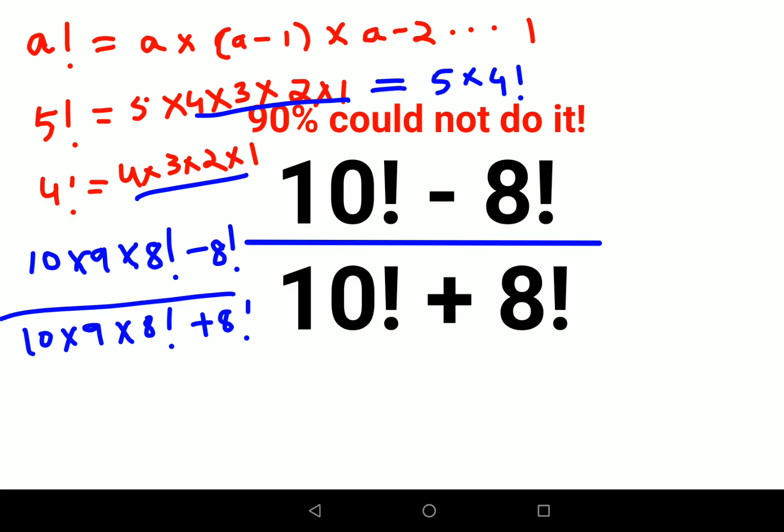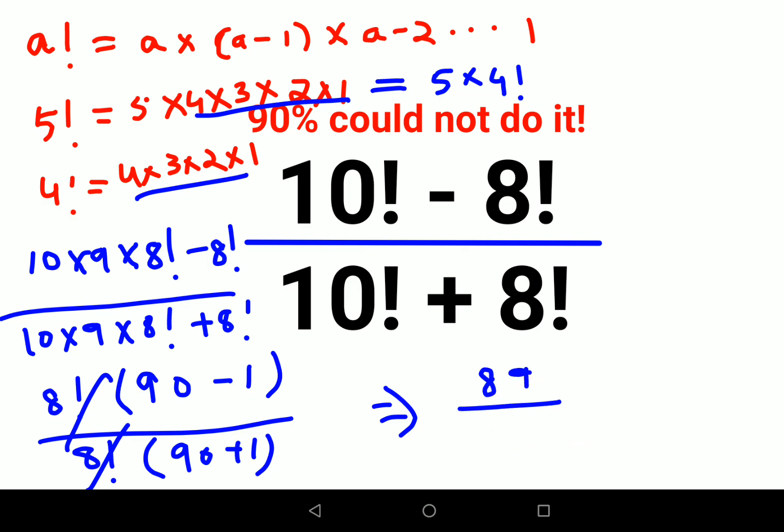So now what we can do is take the 8 factorial common from the numerator. So you are left with 10 into 9 that is 90 minus 1, upon 8 factorial taken common, so now you have 90 plus 1. This factorial and factorial will cancel. 90 minus 1 is 89 upon 90 plus 1 is 91.